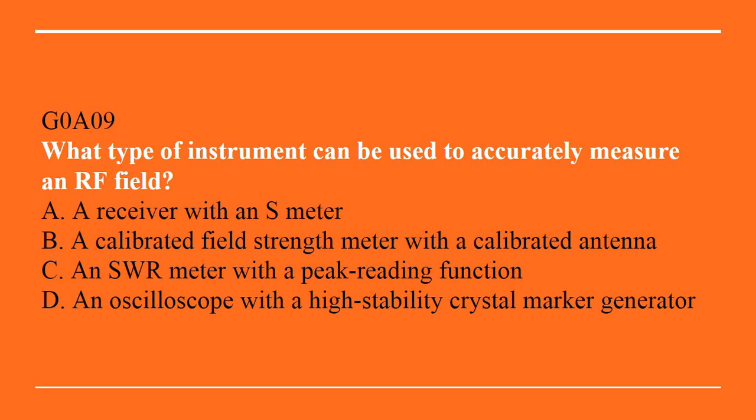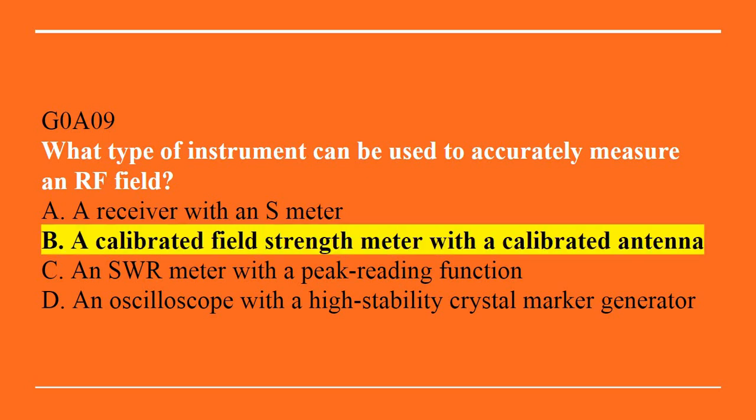G0A09: What type of instrument can be used to accurately measure an RF field? A, a receiver with an S meter. B, a calibrated field strength meter with a calibrated antenna. C, an SWR meter with a peak reading function. Or D, an oscilloscope with a high-stability crystal marker generator. Answer is B — a calibrated field strength meter with a calibrated antenna.